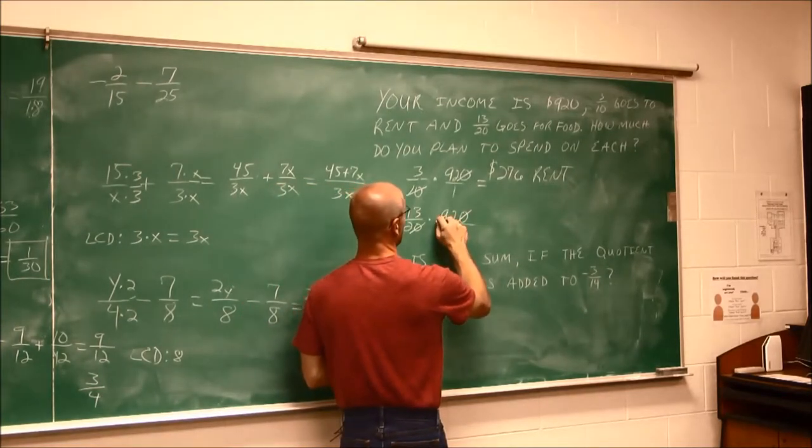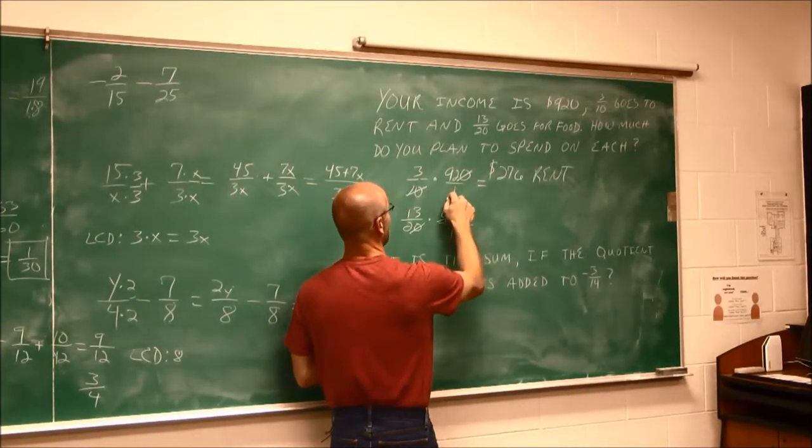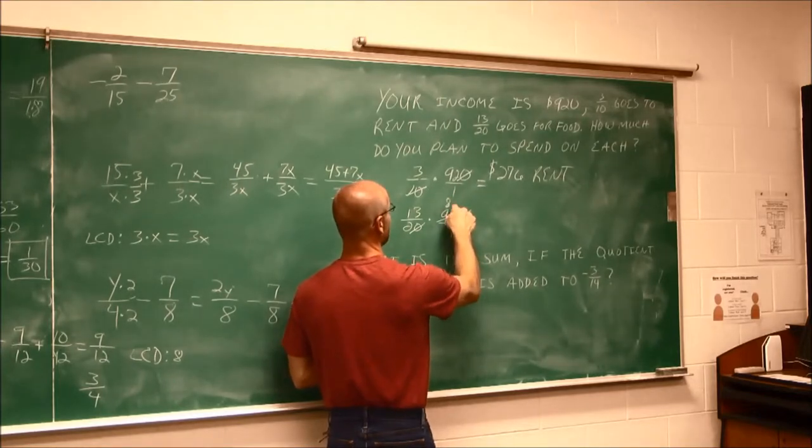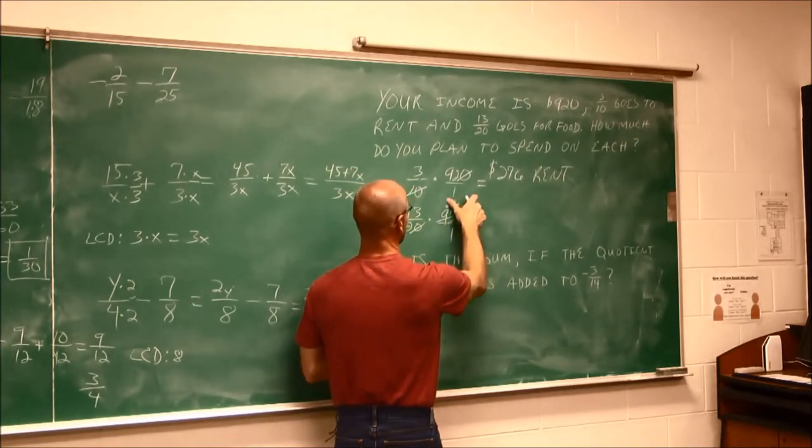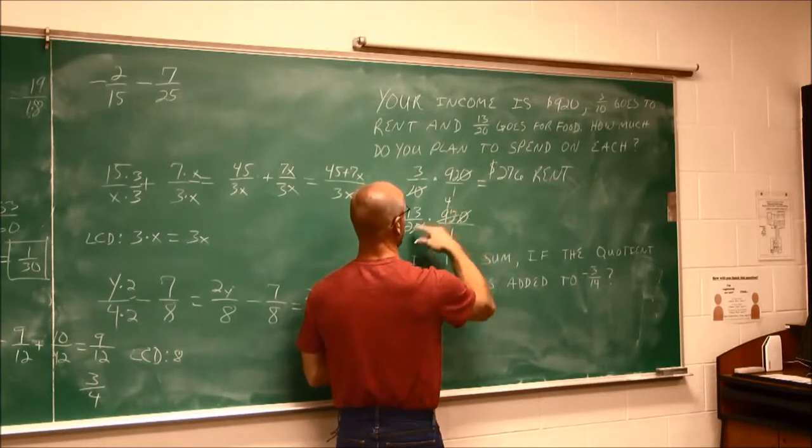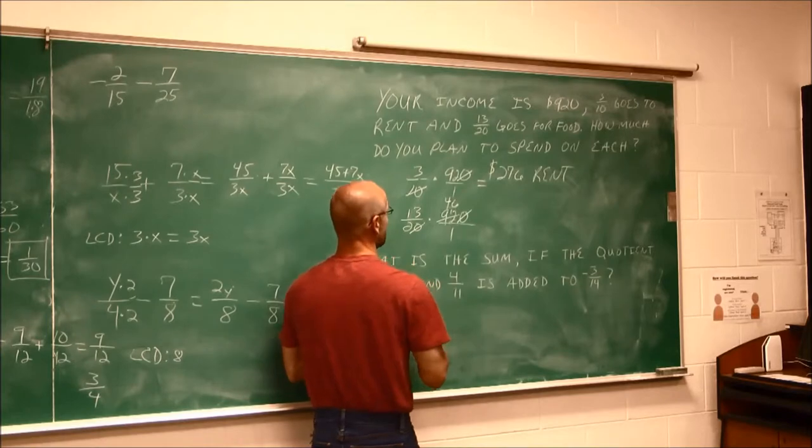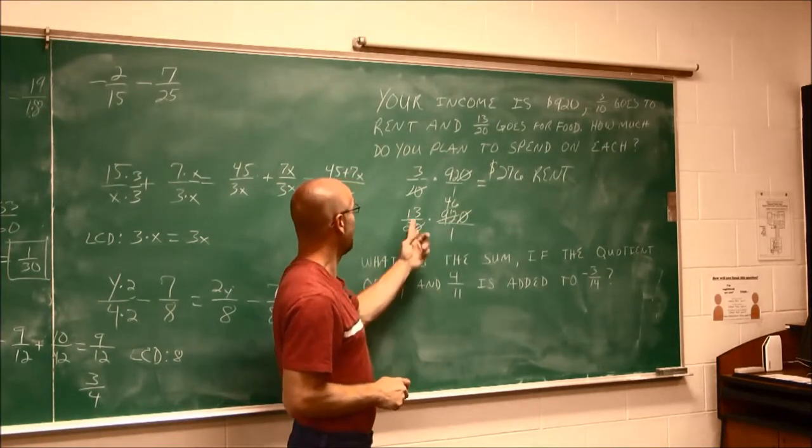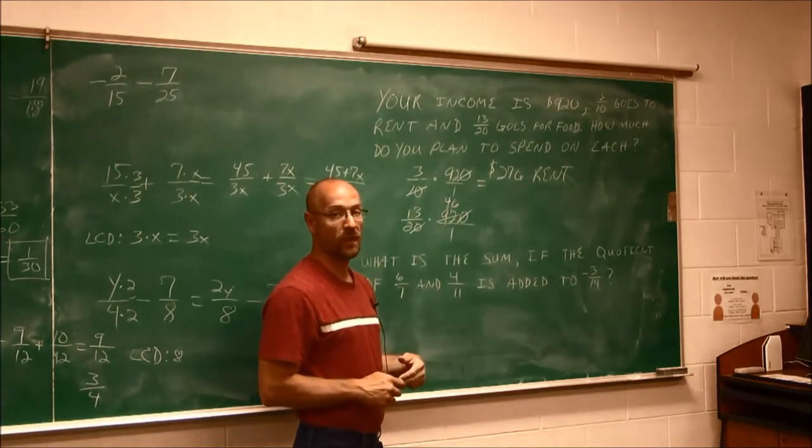So let's see. 2 goes into that 9 4 times with the remainder of 1. And 2 goes into 12 6 times. So we get 46. Now I have to multiply 13 times 46.